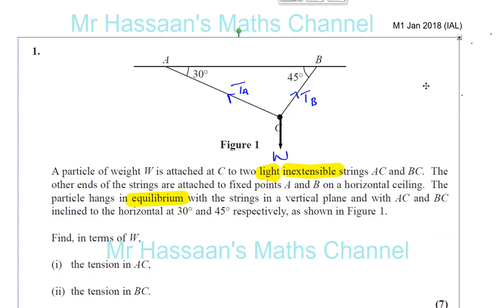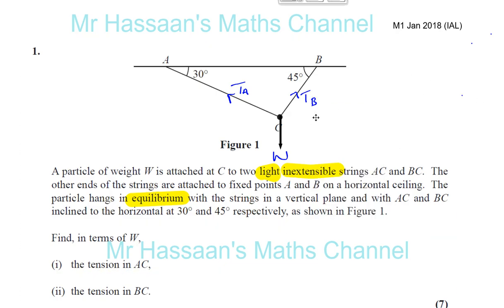So let's go straight into this. What we want to do is resolve the forces acting on this particle, horizontally and vertically. We know that all the forces cancel out. When I resolve horizontally, the forces acting to the right and forces acting to the left must be equal. If I resolve vertically, the forces acting up and the forces acting down must also equal each other.